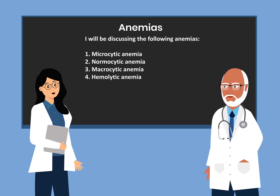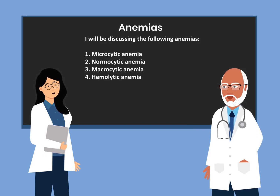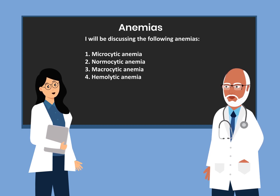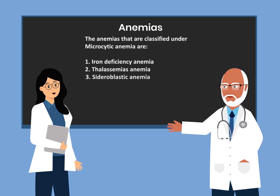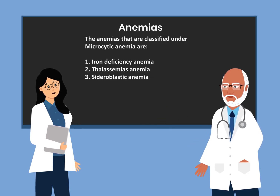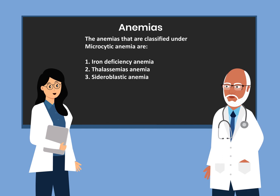I will be discussing the following anemias. Number one, microcytic anemia. Number two, normocytic anemia. Number three, macrocytic anemia. And number four, hemolytic anemia. The anemias classified under microcytic anemia are: number one, iron deficiency anemia; number two, thalassemia anemia; and number three, sideroblastic anemia.